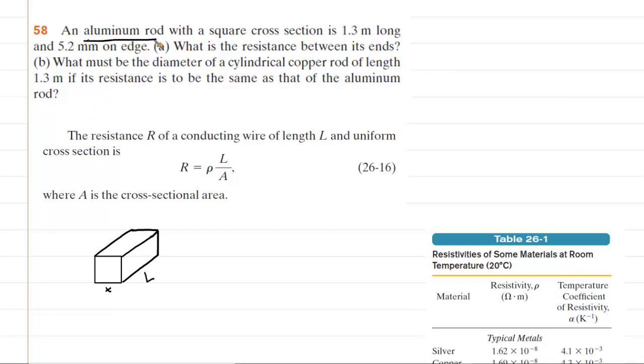So here we have an aluminum rod. It has a square cross-section with a particular length and also a particular edge length. Our first job is to find the resistance between the ends of that aluminum rod.